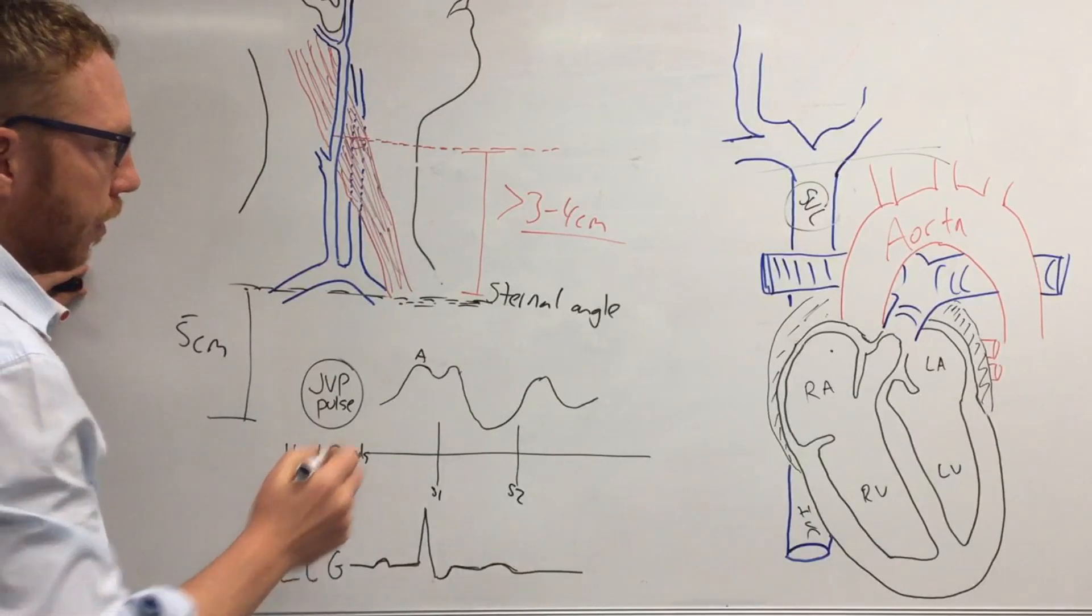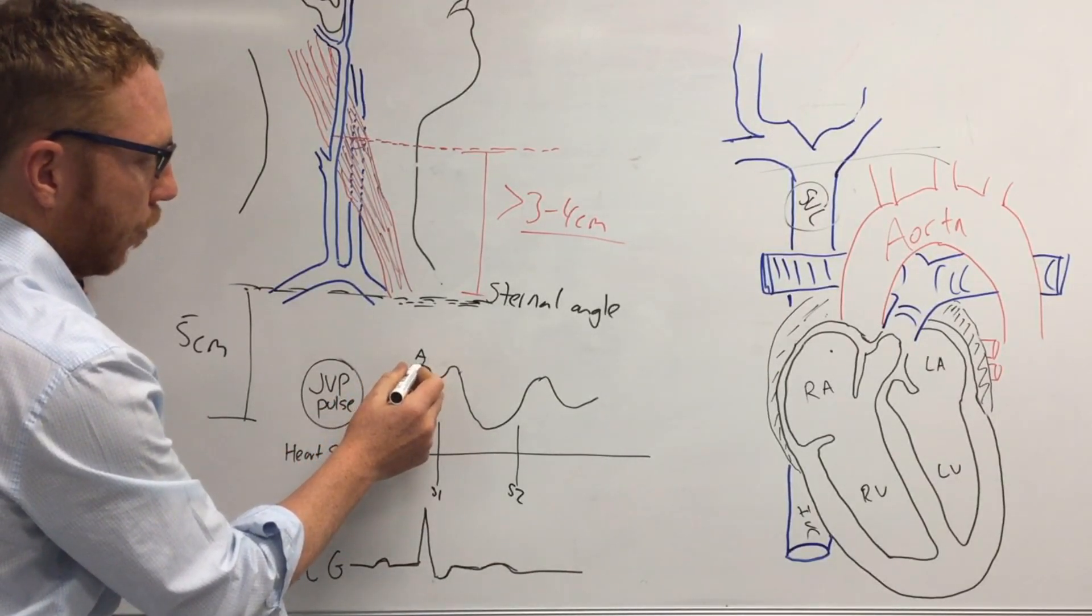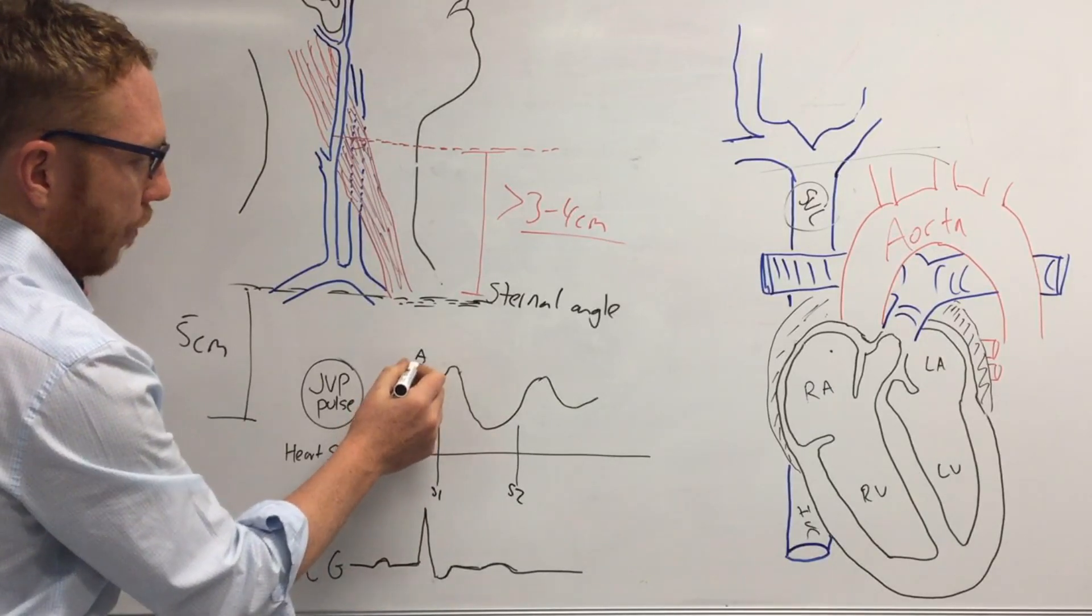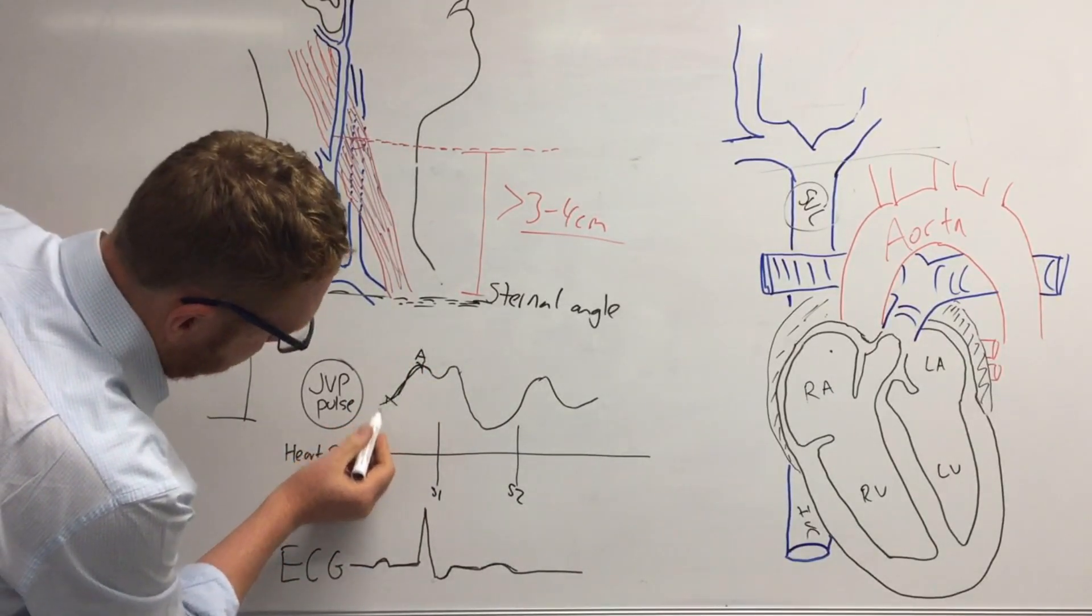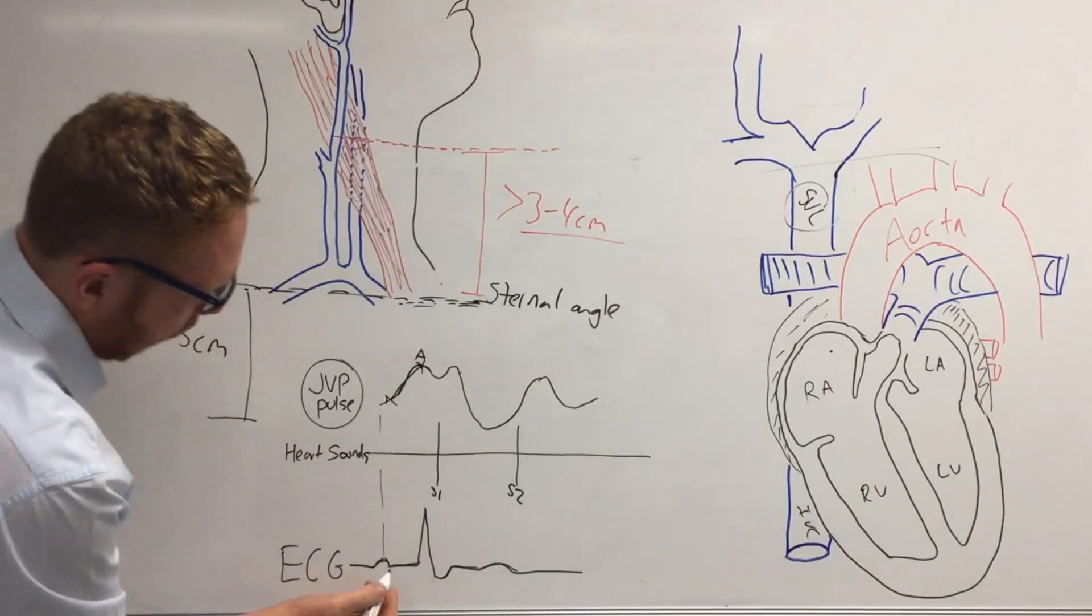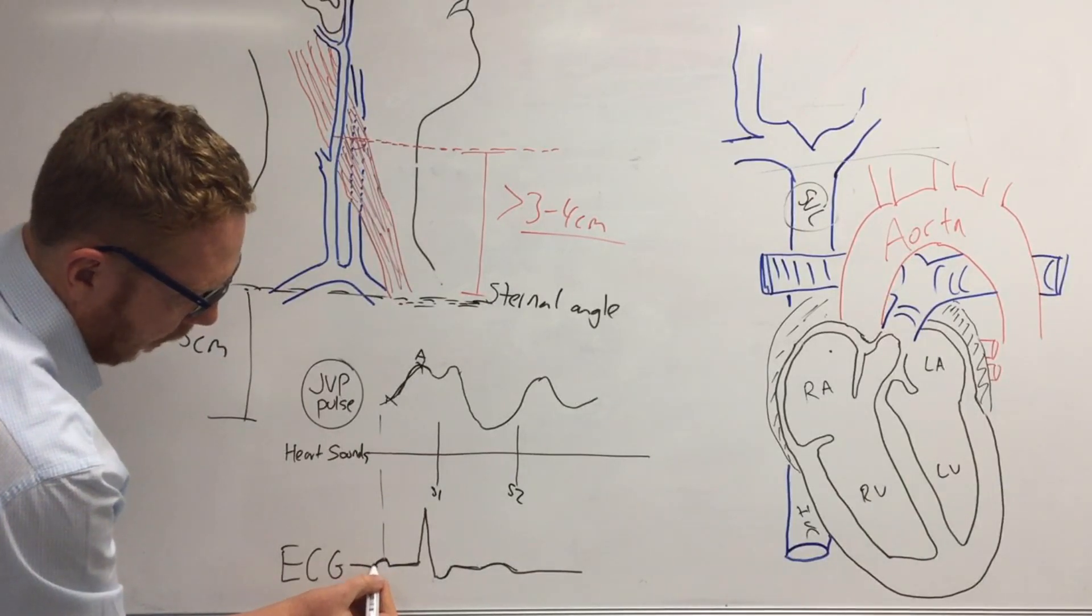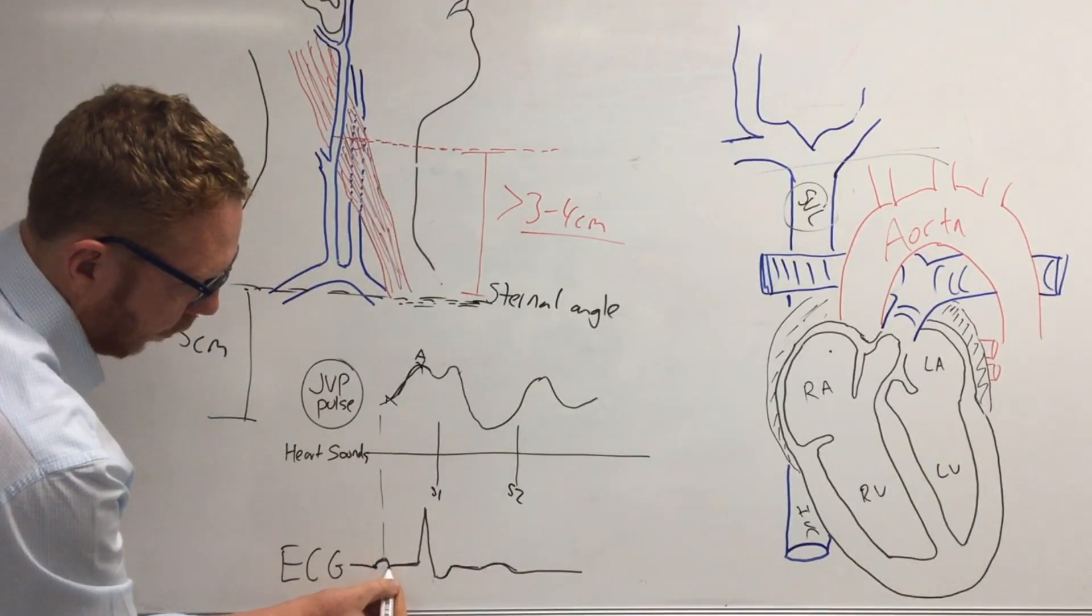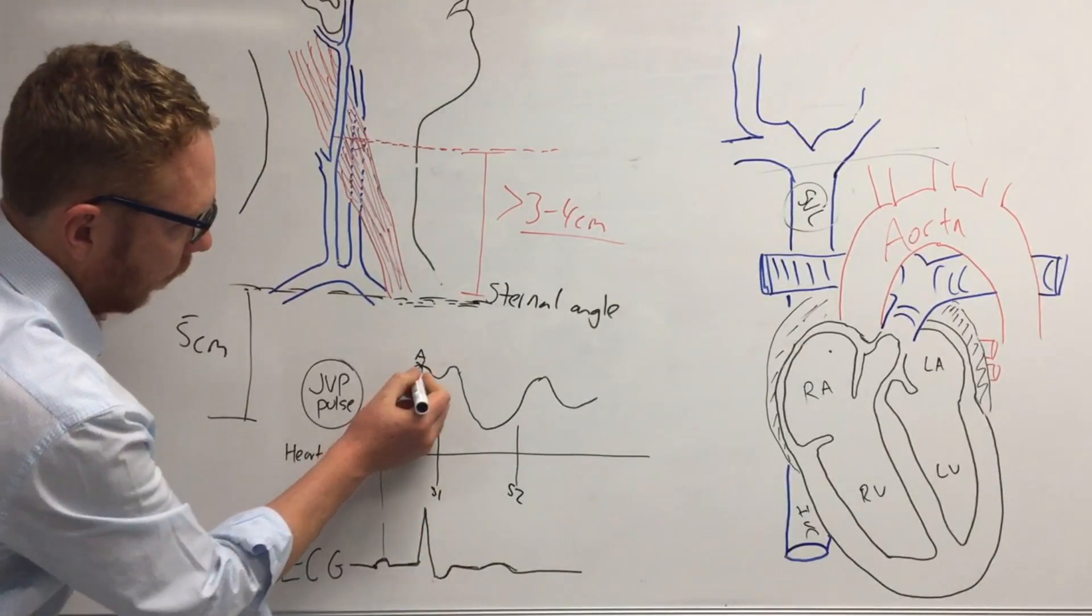And that is corresponding to atrial contraction, or at least to that point. So all of this up to that point is atrial contraction. And you can see it corresponds pretty well to the P wave. So the P wave is the electrical firing, so the SA node fires, depolarizes through the atria, and that really matches up quite well to the atrial contraction.